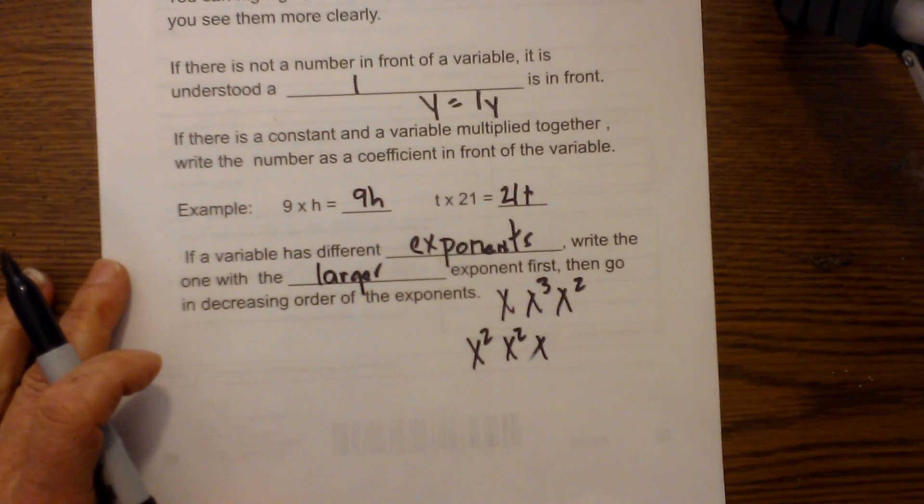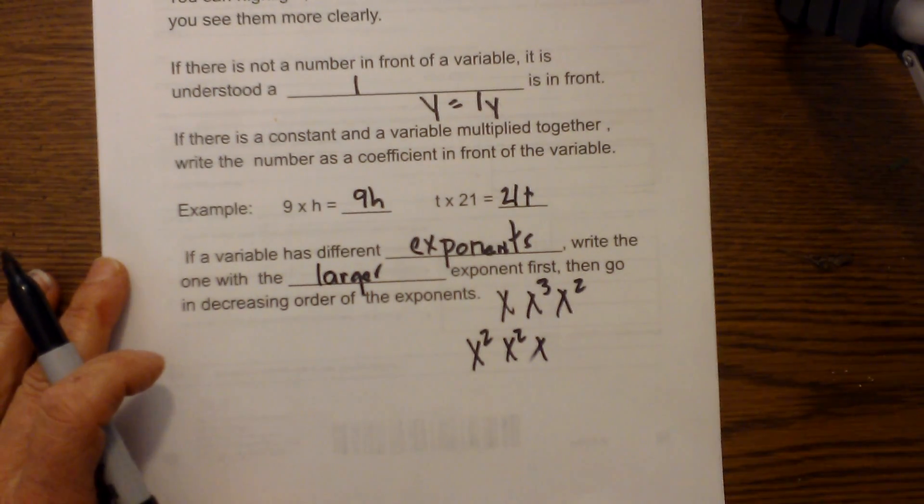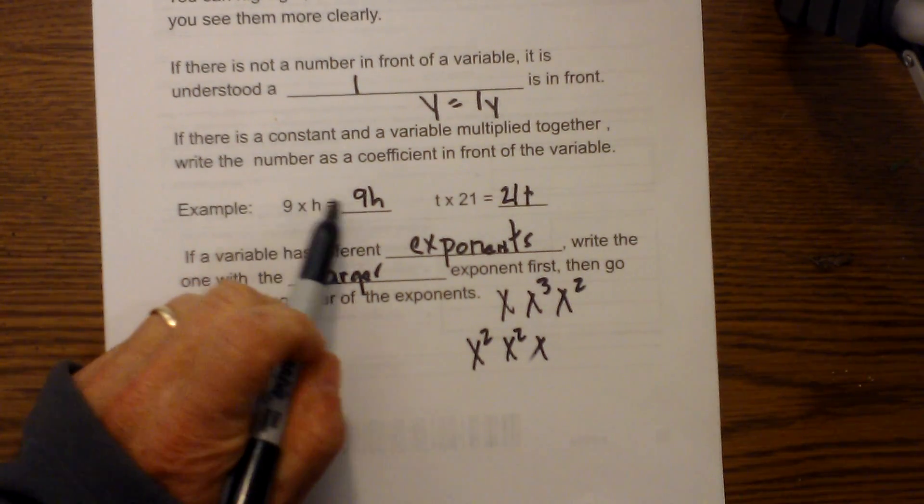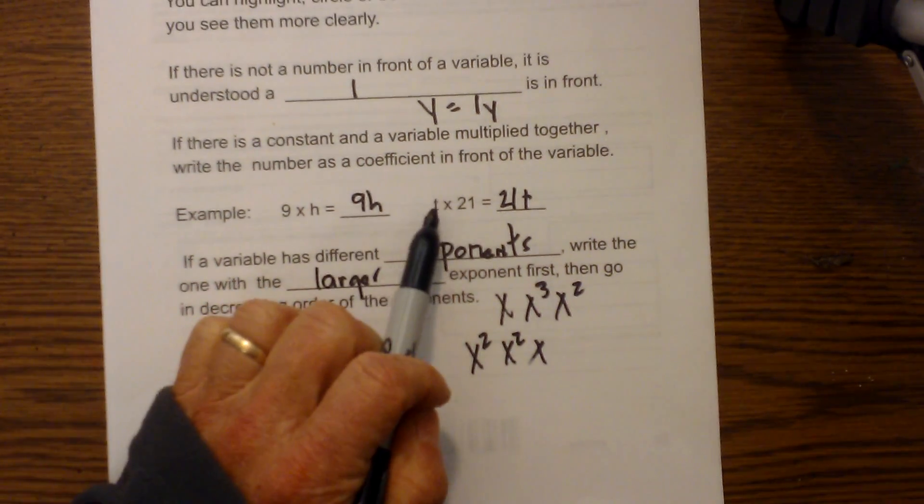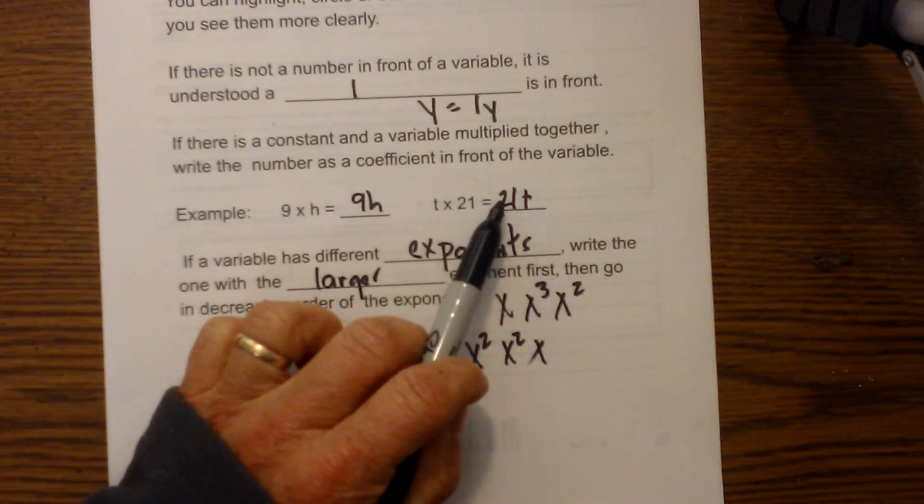Next, if you have a constant and a variable multiplied together, write the number as a coefficient in front of the variable. So, 9 times h becomes 9h, t times 21 becomes 21t.